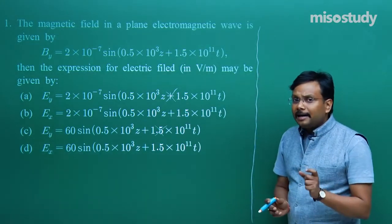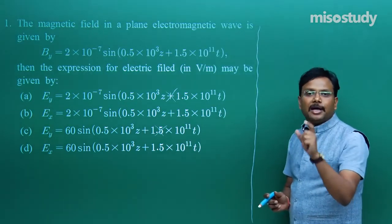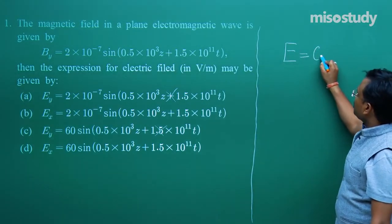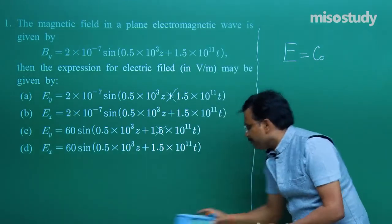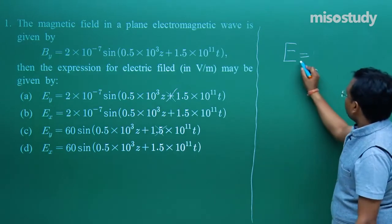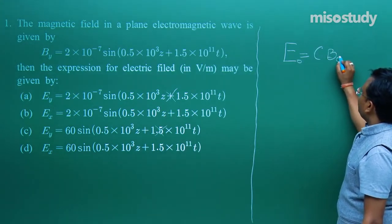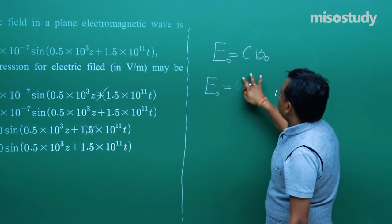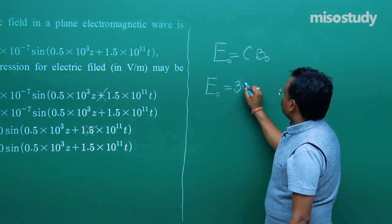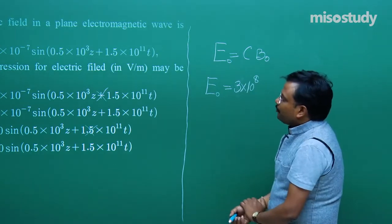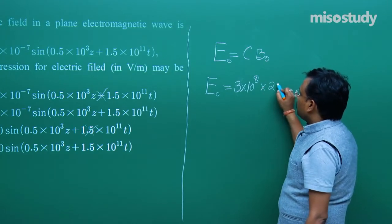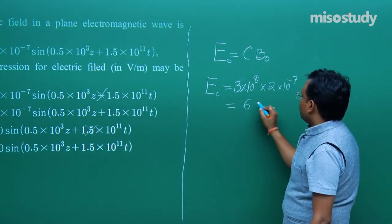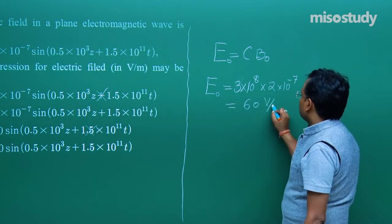What is the relation between electric field, magnetic field, and speed of the EM wave? The relation is E = C·B, where C is the speed of light. So E₀ = C·B₀. Putting the values: C = 3×10⁸, and B₀ is given as 2×10⁻⁷. So E₀ = 3×10⁸ × 2×10⁻⁷ = 60 volt per metre.